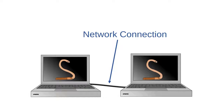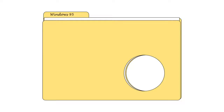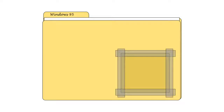Some worms spread across the world, infecting millions of internet-connected devices in a matter of days or hours. So how is it that we aren't constantly contracting worms? Worms can only spread if they can exploit some known security weakness in a system. When weaknesses become known, software companies usually send out remedies called patches. Patches modify legitimate software to make it more resistant to security breaches. If you install patches for your software as soon as they become available, your computer is much less likely to contract a worm.